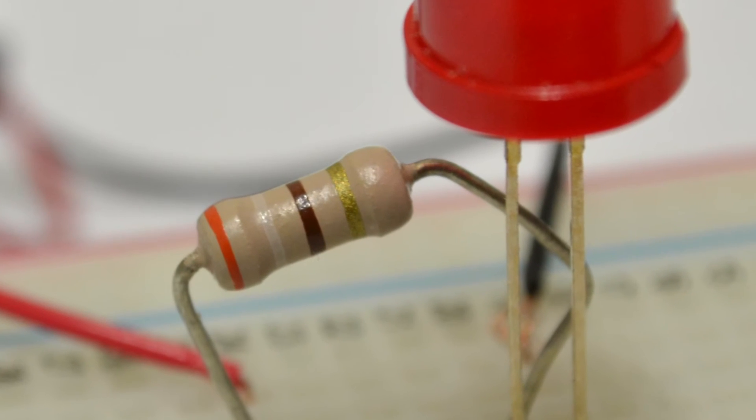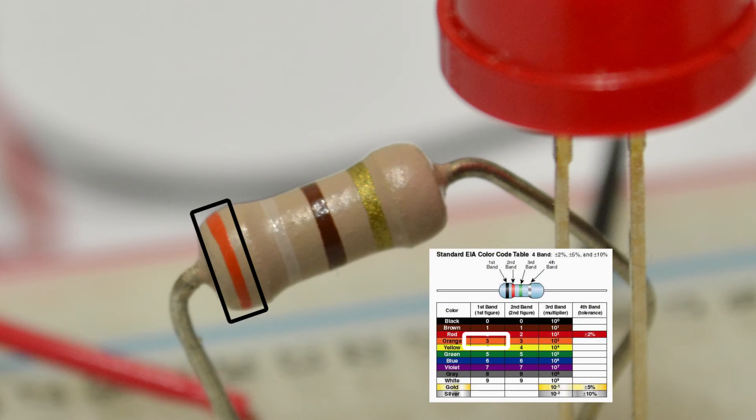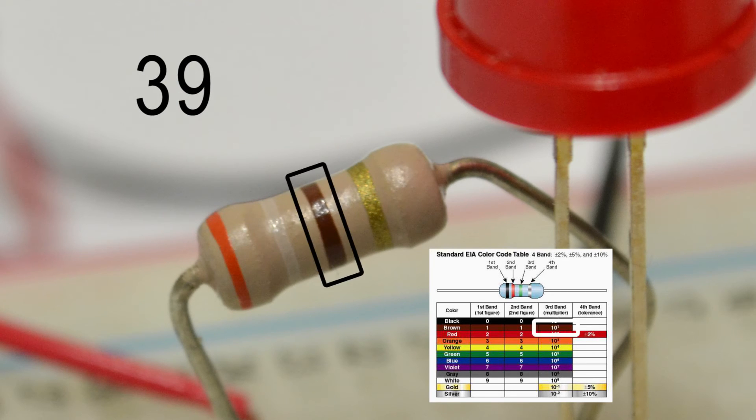For practice let's take a look at the resistor we actually used. The first band is orange. That's a 3. The second band is white. That's a 9. So we start with a 39. The third band is brown. That's 1 which means we put 1 zero after the end. So we have 3, 9 and 0 or 390 ohms. Hey! That's what we wanted!